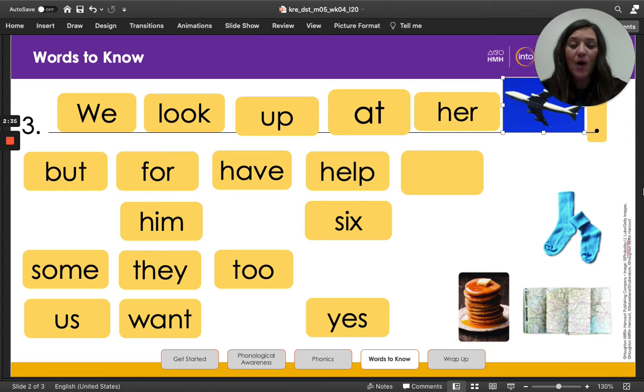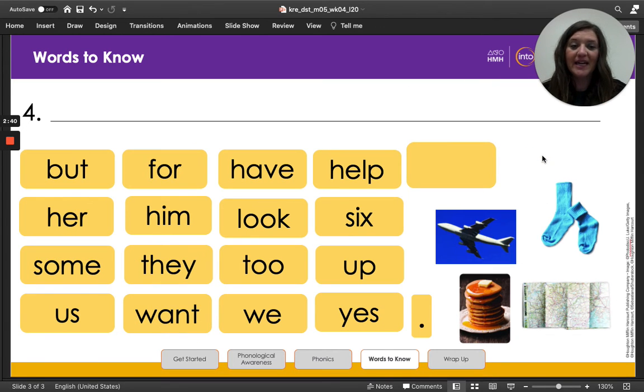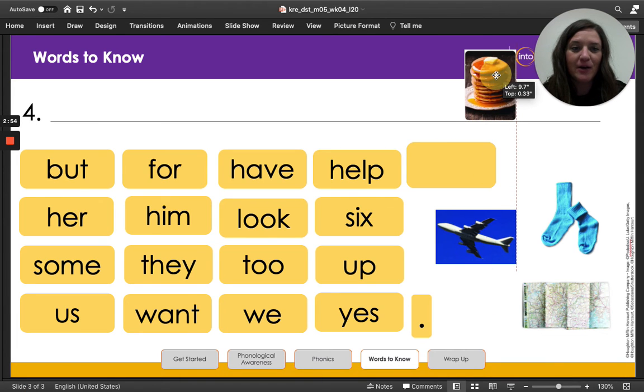So now we are going to create another sentence. So last time I picked to write about the plane, let's write about those pancakes because they look yummy. So we're going to write about the pancakes. I'm going to go ahead and put our picture of the pancakes right there.